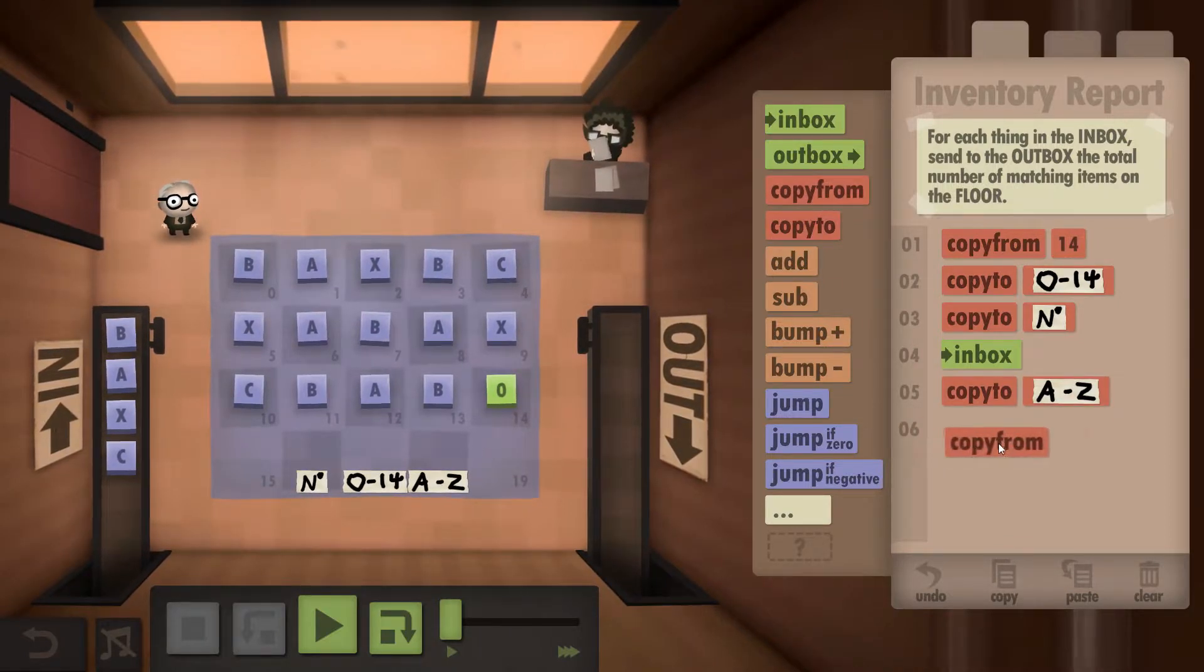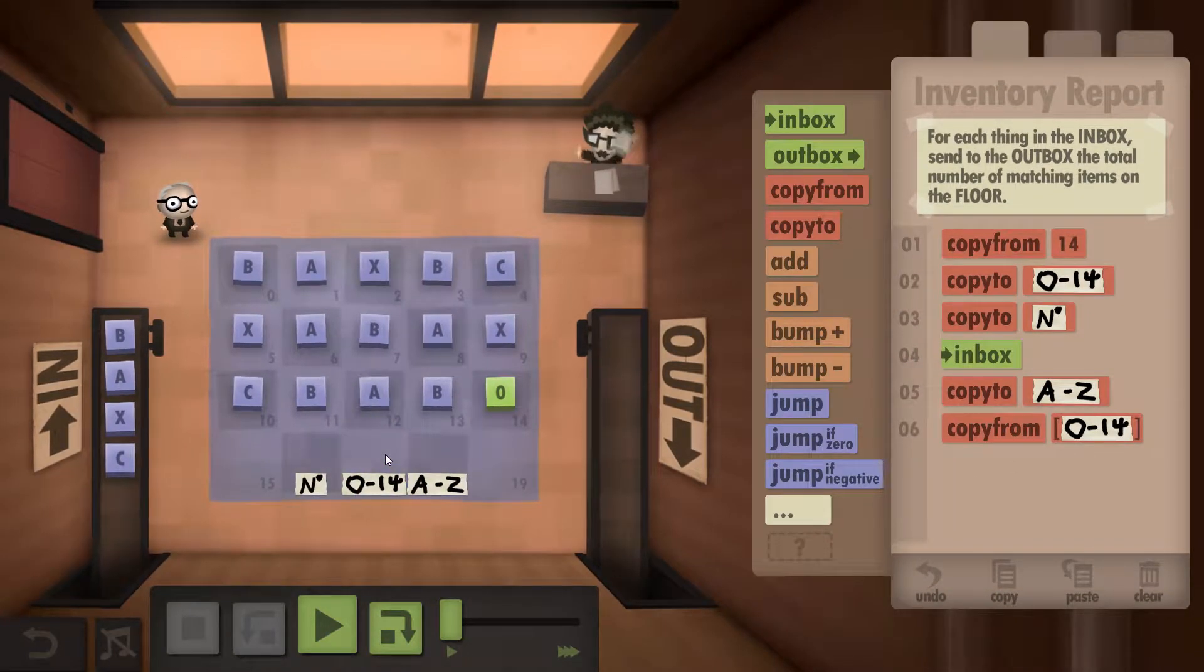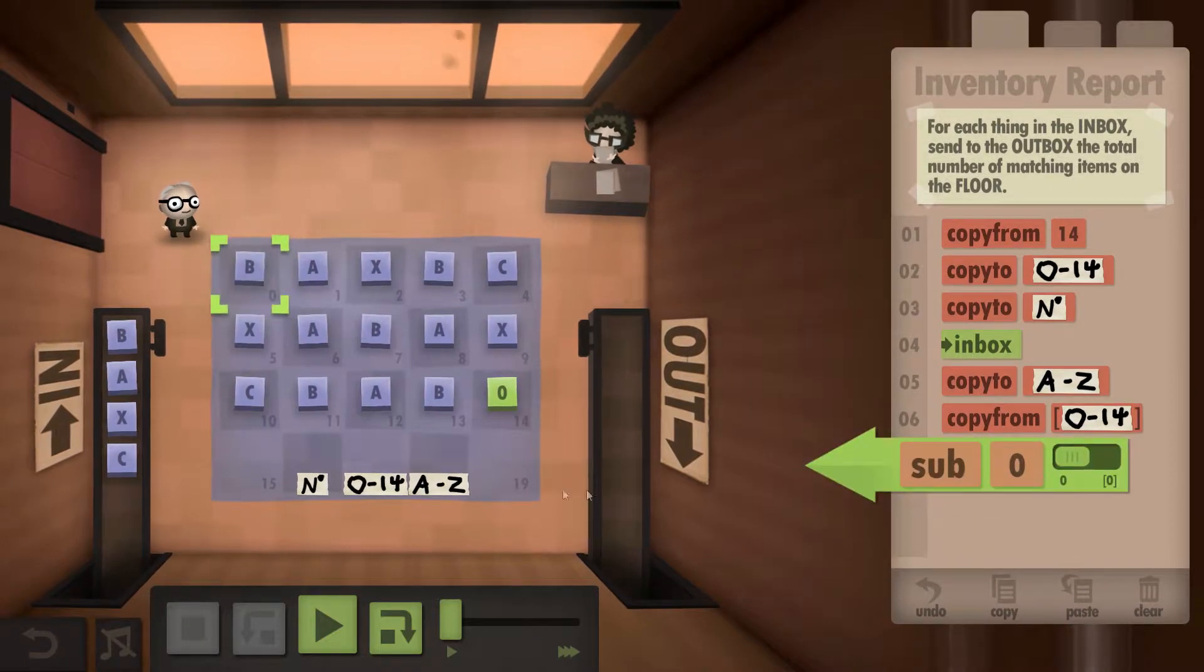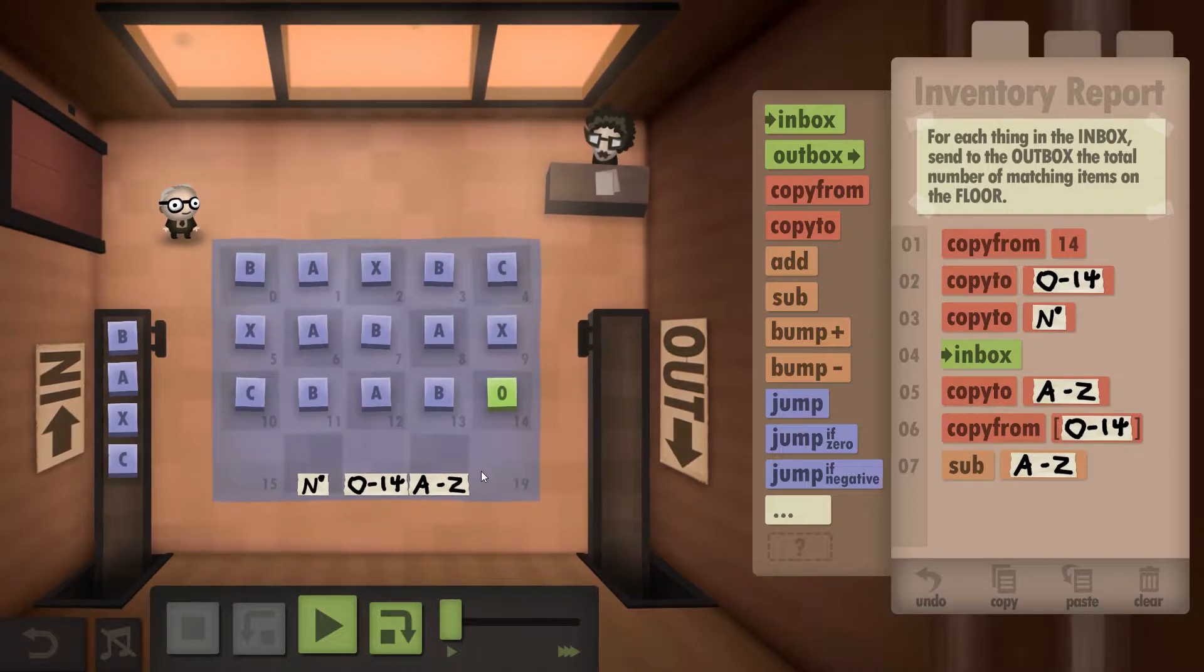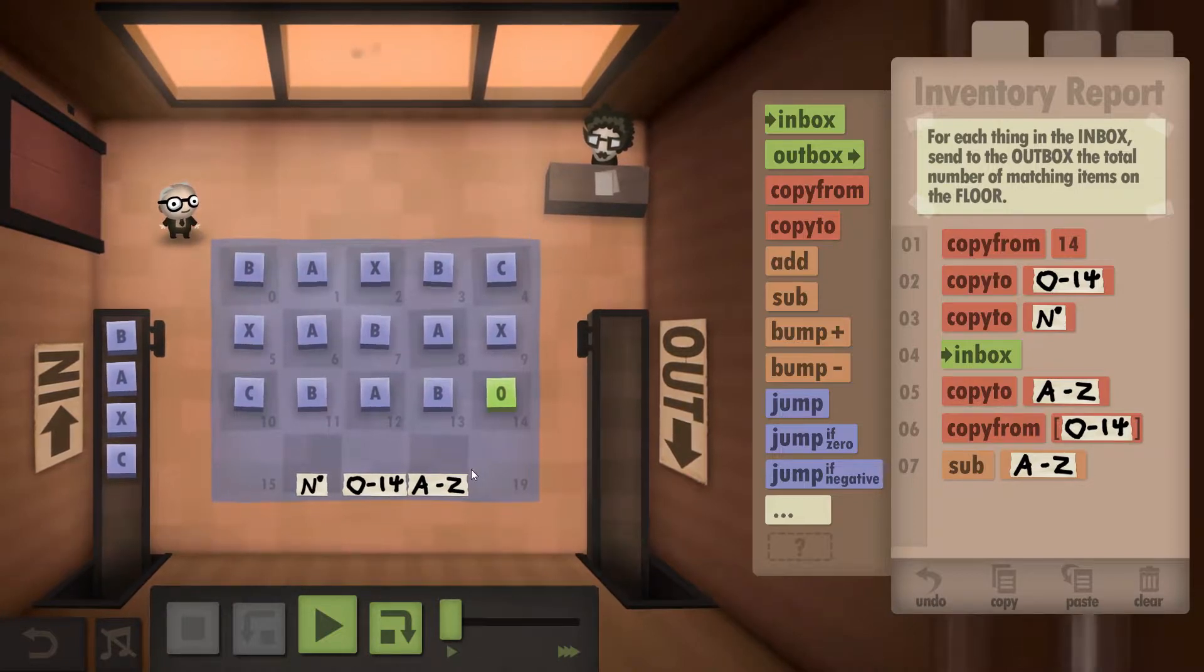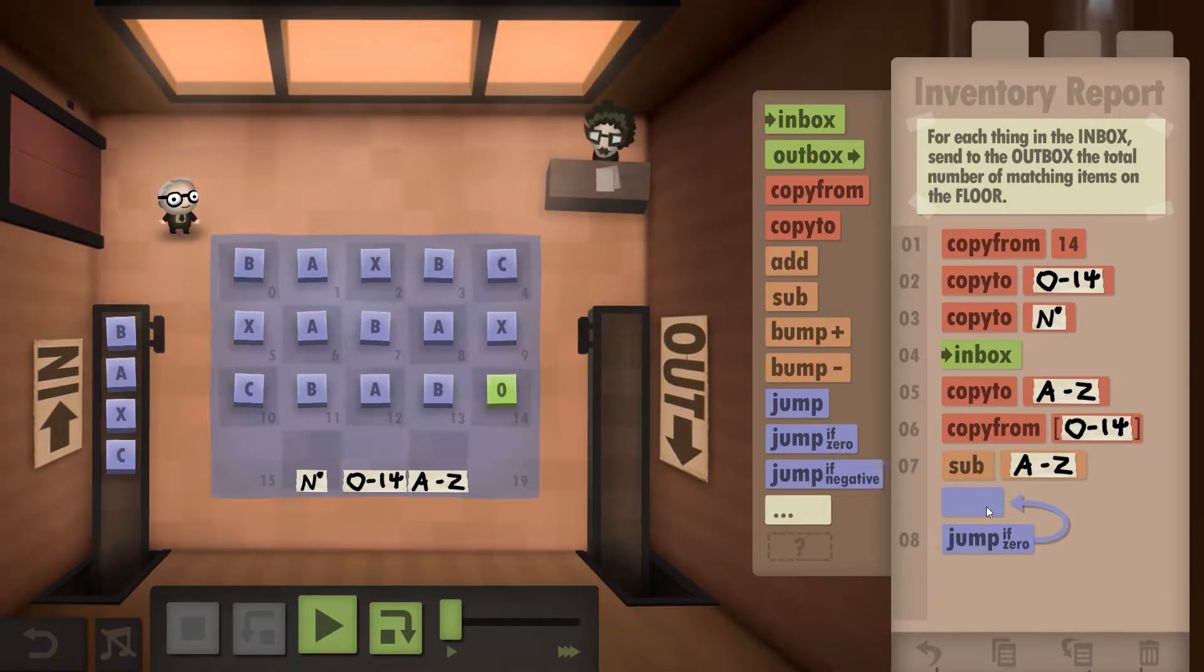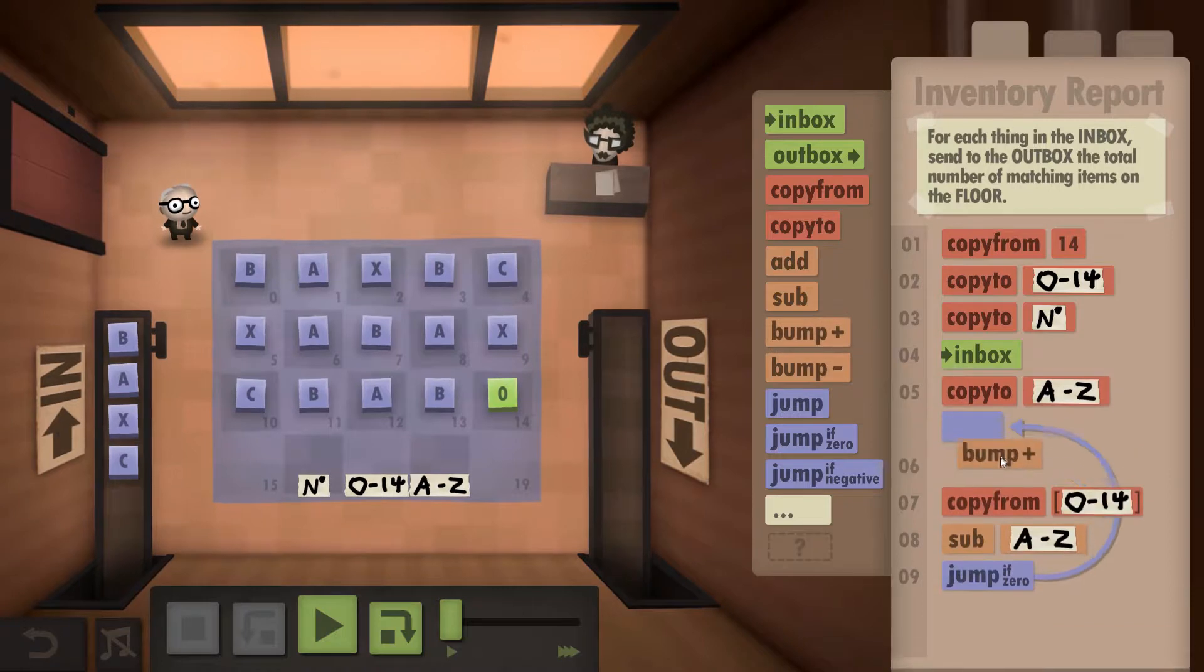Now we've done all that, we're going to start comparing. So we're going to copy from the position that this one tells us to, which will be zero straight off the mark, and we're going to subtract it from this one. So if this is a B, so B minus B, there's difference of zero, so the answer is going to be zero. If it's a zero, we want to jump up like so.